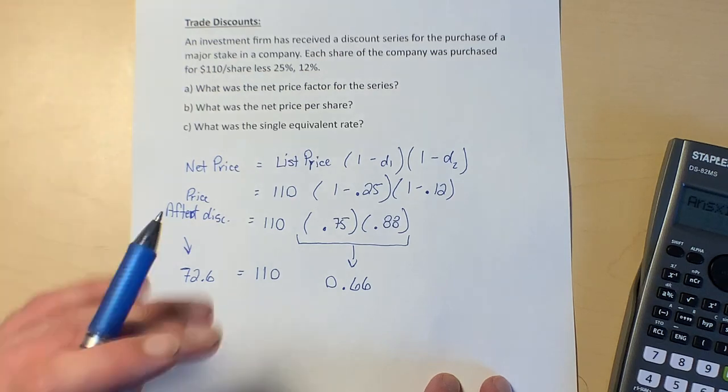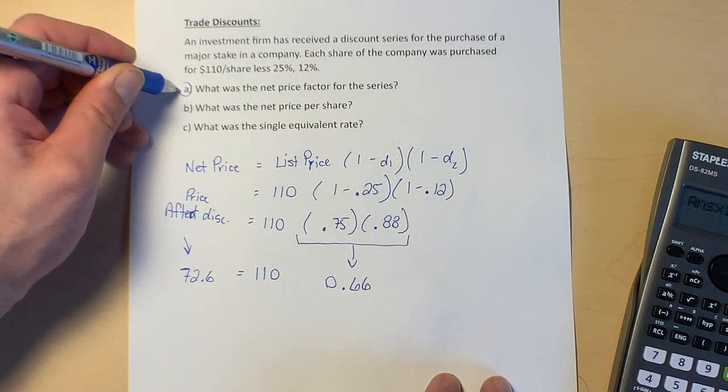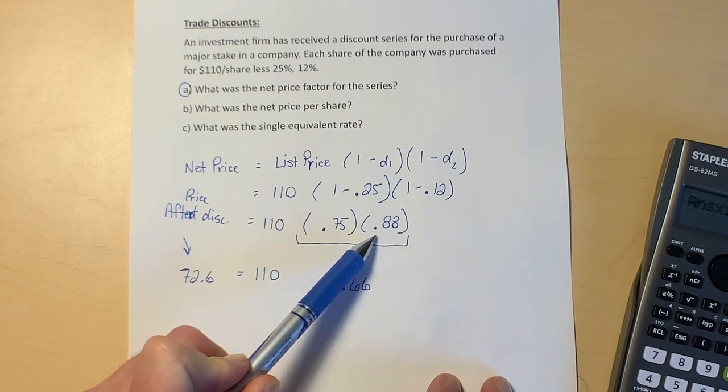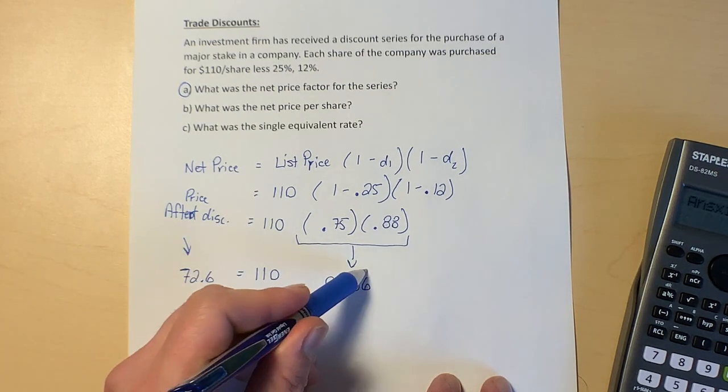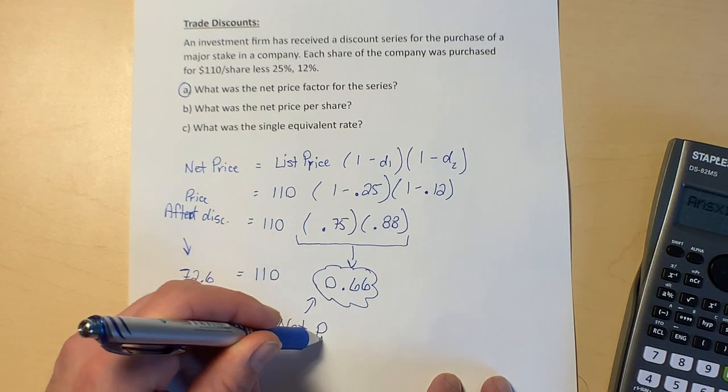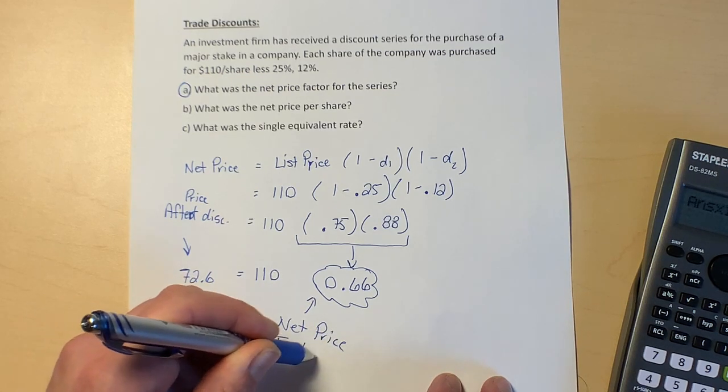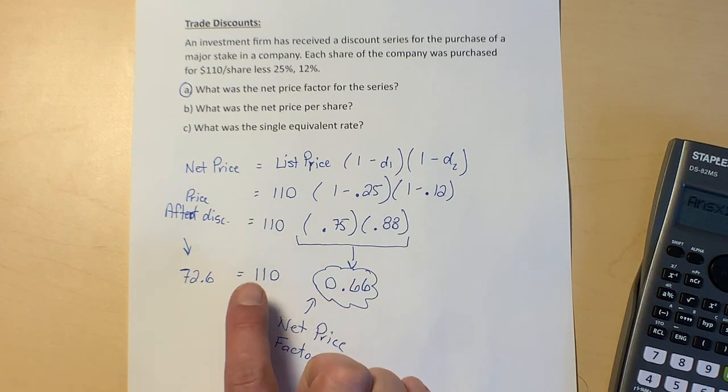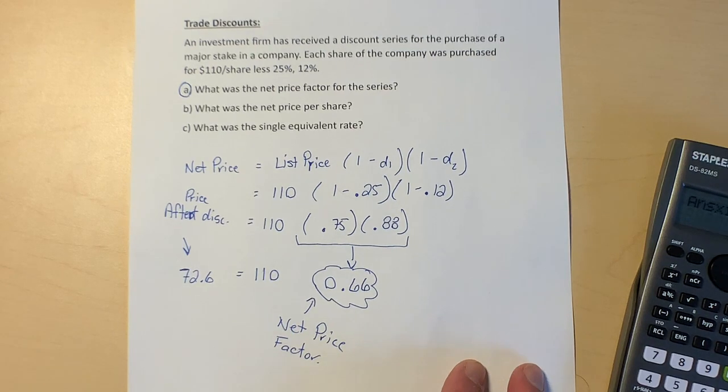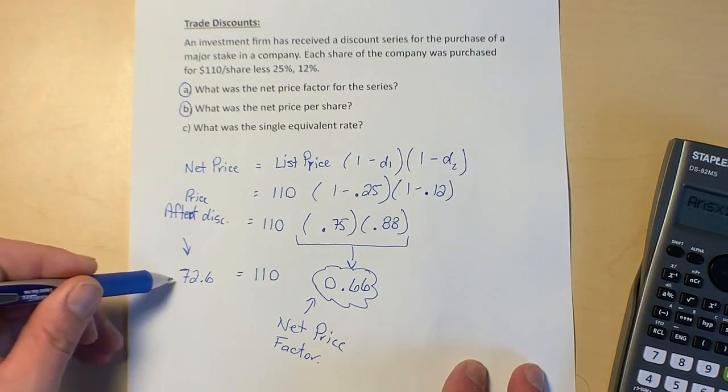The first part says: what is the net price factor? The net price factor is when we multiply these two numbers together to get this 0.66. This is the net price factor. That's basically saying that of that original price of $110, we are paying 66% of it. So from the original price, we're paying 66% of the original price. The net price per share we figured out is $72.60.